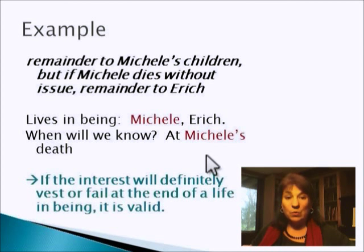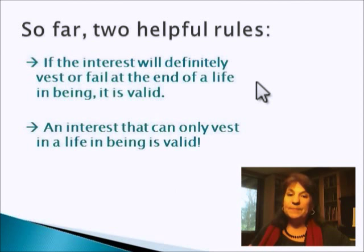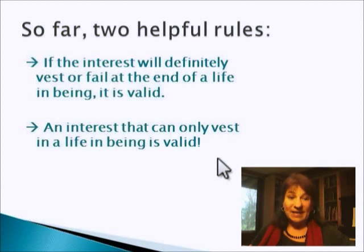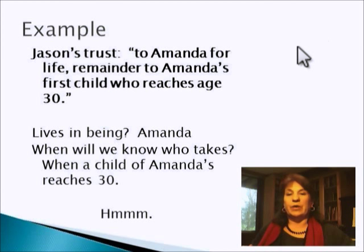So here's a second rule that you can always use. We've got two: if the interest will definitely vest or fail at the end of a life in being, it's valid. And an interest that can only vest in a life in being is valid. Here's another example. Jason's trust goes to Amanda for life, remainder to Amanda's first child who reaches age 30.